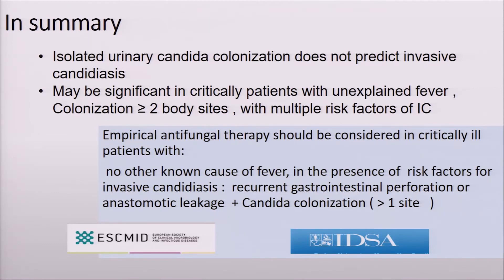In my practice, we don't routinely do candida scoring or swab patients two to three times per week. We pick our patients carefully. Without access to beta-D-glucan, we choose patients who have been colonized at more than two sites, yet have unexplained fever despite antibiotics, with no identified source of infection, who have had their catheter changed, and who belong to a high-risk group such as hematological patients or post-abdominal surgery — then we might empirically start antifungal after sending blood cultures. If beta-D-glucan is available, we use that as an additional data point and stop antifungals if cultures and beta-D-glucan are negative.